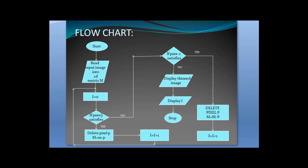If it does not satisfy the pass1 condition, it moves to the pass2 condition. It checks for the pass2 condition. If yes, it deletes the pixel and moves to the next pixel. If it does not satisfy the pass2 condition also, it displays the pixel. Hence, a thinned image is displayed and the program stops.